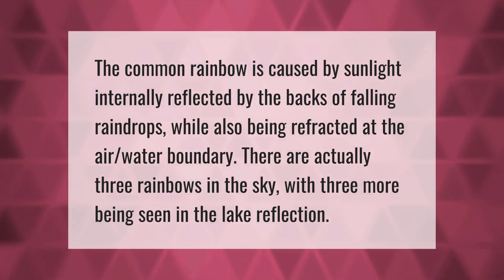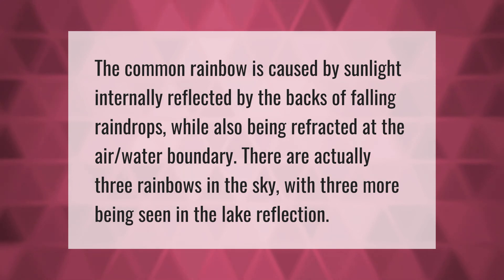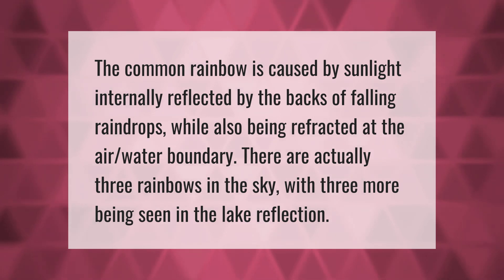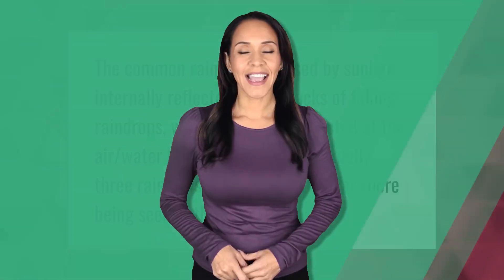The common rainbow is caused by sunlight internally reflected by the backs of falling raindrops, while also being refracted at the air-water boundary. There are actually three rainbows in the sky, with three more being seen in the lake reflection.